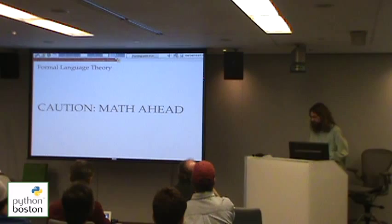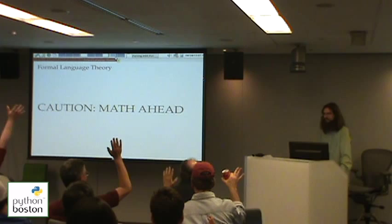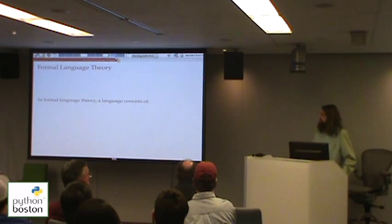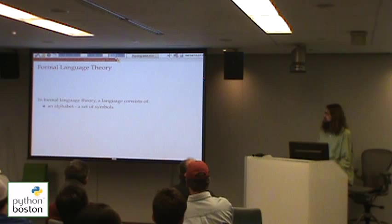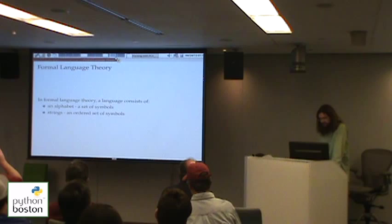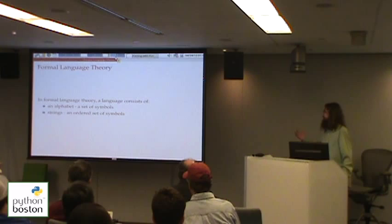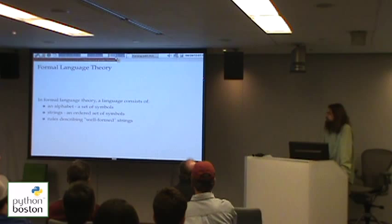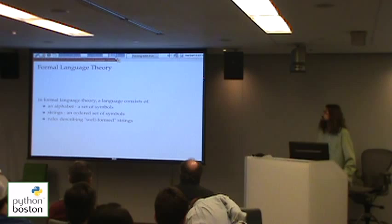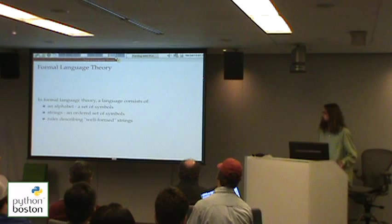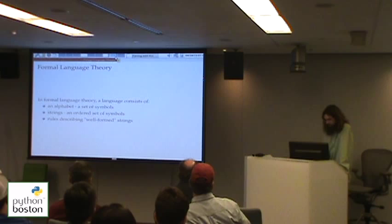I'm going to throw some math at you, because I know everyone here loves math. I'm going to talk about formal language theory. What is formal language theory? It's this area of math and computer science meant for dealing with languages. A language consists of an alphabet — some set of symbols — and then strings, which are any ordered set of symbols. Then there are some series of rules used to describe what is a well-formed string. Anything that is a well-formed string is considered part of that abstract language, and anything that's not well-formed isn't part of that language.